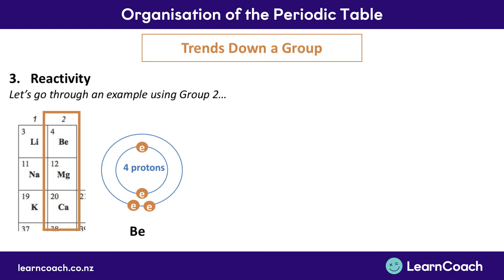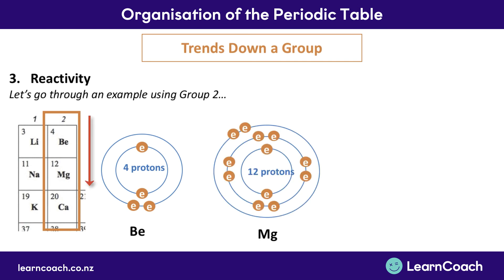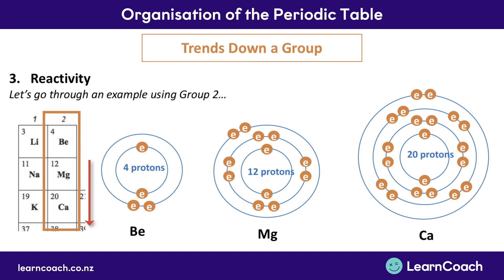Here you can see the electron arrangement for beryllium. As you move vertically down from beryllium to magnesium, a whole additional shell of electrons is gained and the valence electrons are getting further away from the positive nucleus. The same happens again moving from magnesium to calcium, where another whole shell of 8 electrons is gained and the valence electrons are becoming further and further from the positive nucleus. This means they're more easily lost, so calcium is more reactive than magnesium, which is more reactive than beryllium.